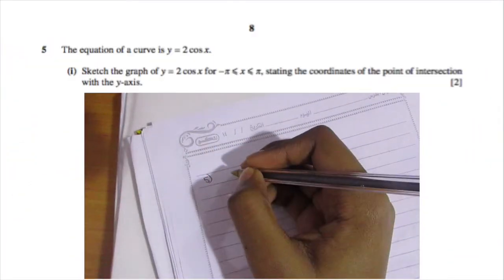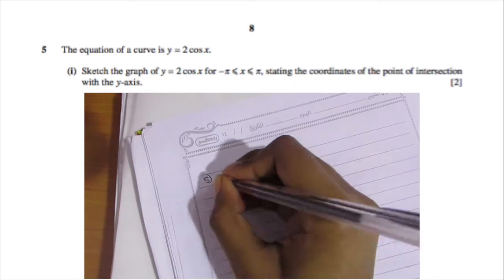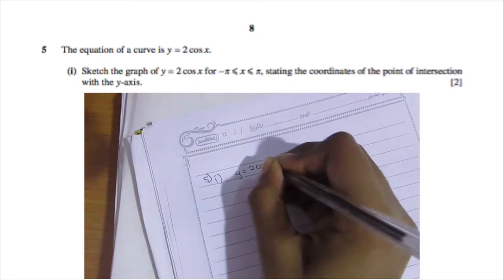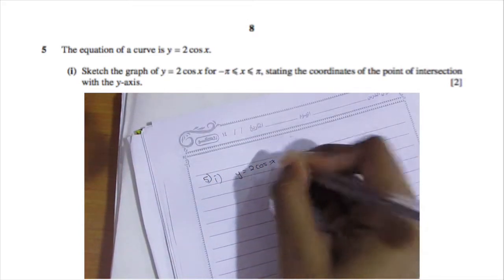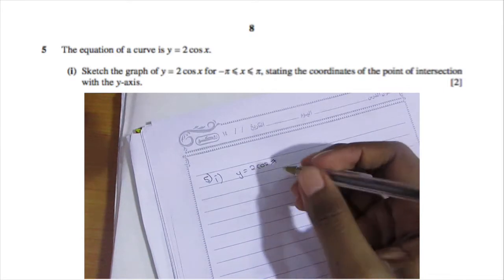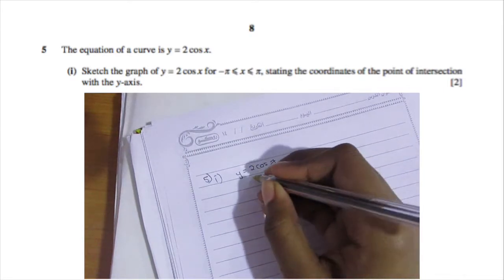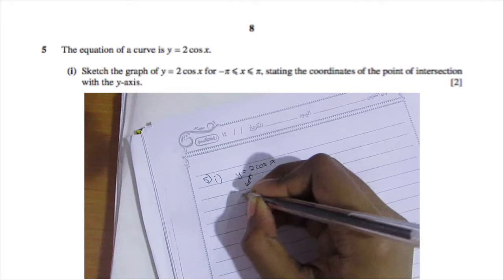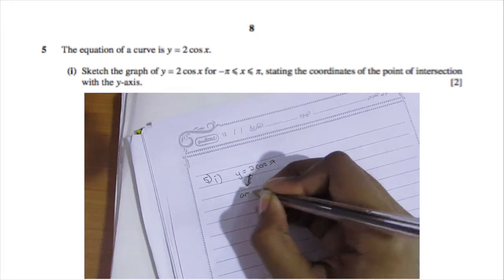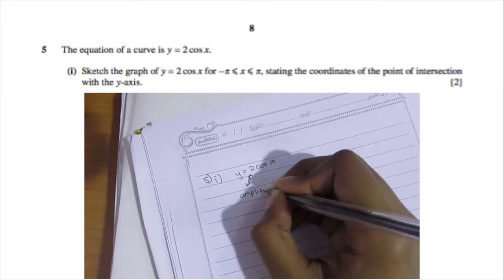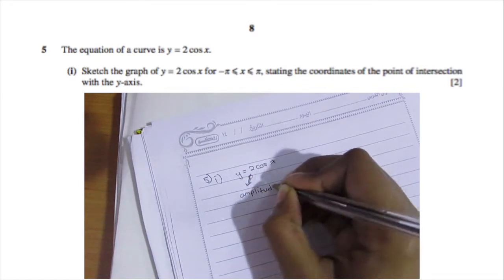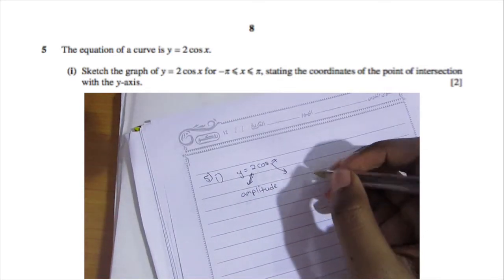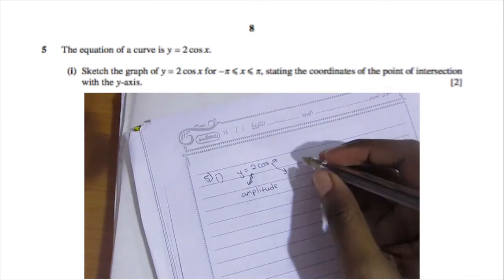Welcome back. We'll be solving the fifth question now. The equation of a curve is y = 2 cos x. We're going to sketch that curve between negative pi and pi — or in degrees, negative 180 and 180 — and we're also going to state the coordinates of the point of intersection with the y-axis.